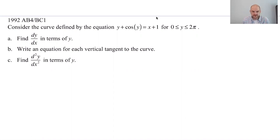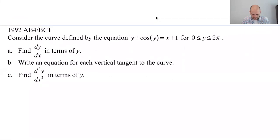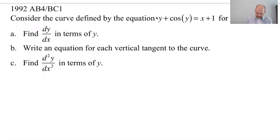So let's see if we can do it. Consider the curve defined by the equation y plus cosine of y equals x plus 1 for 0 ≤ y ≤ 2π. So this is a very y-focused problem. We want to find dy/dx in terms of y, write an equation for the vertical tangents to the curve, and then find the second derivative in terms of y. So I think we're going to be able to do all that.